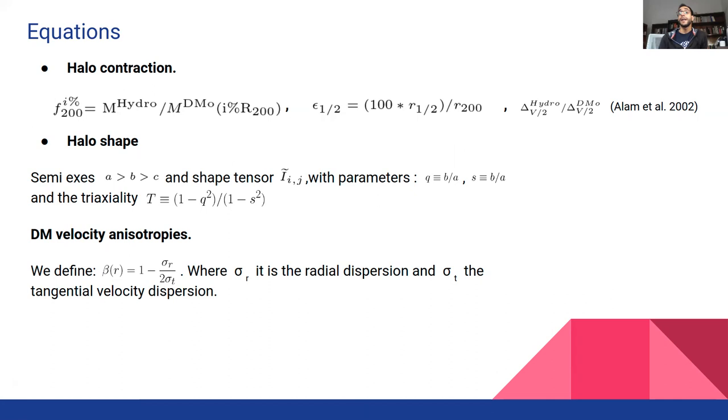And a term introduced by Alam et al. 2002 for a robust measuring of contraction and expansion. This is the density of the halfway up radius, the typical region where conflicts between predicted and observed dark matter halo density are more severe.